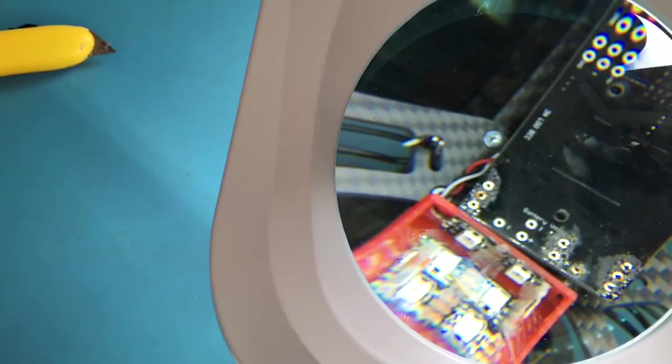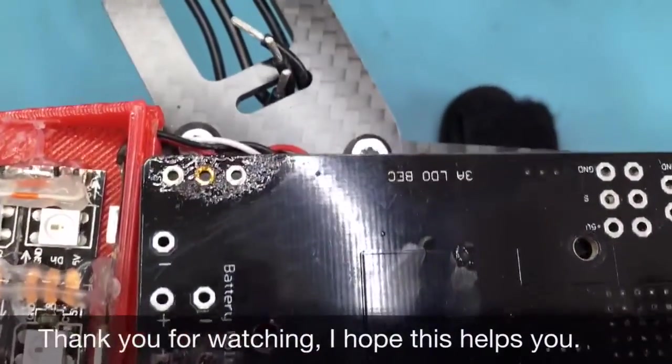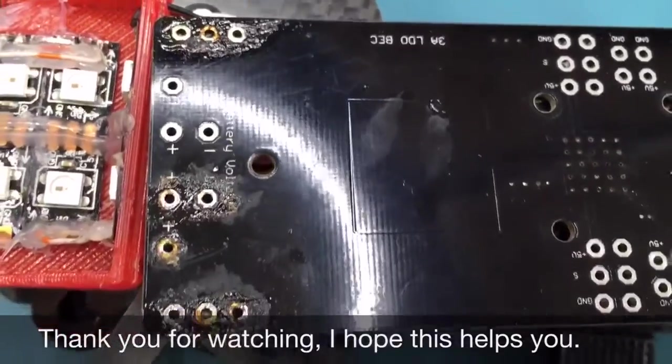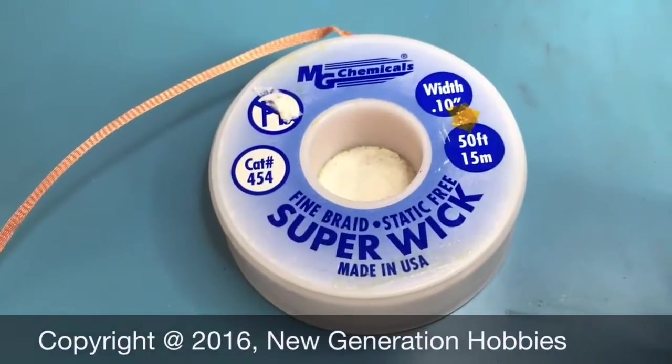There we go, this hole is completely clear now. So all said, there are the holes which were cleared - that's the result of working with a solder wick. Solder wick looks like this, Super Wick.